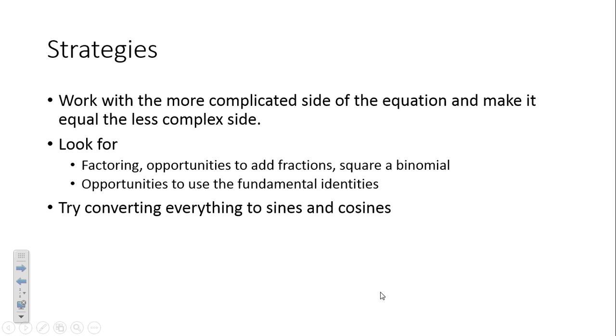First of all, work with the more complicated side and make it equal to the less complicated side. Look for any factoring opportunities, like we were doing this last section, and any opportunities to square a binomial or find the perfect square or difference of squares. Look for opportunities to use those fundamental identities. And if all else fails, try converting everything to sines and cosines.